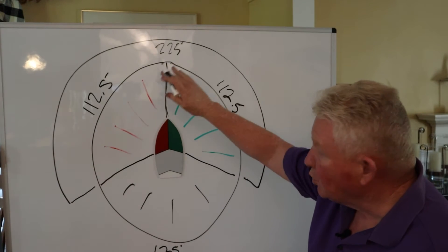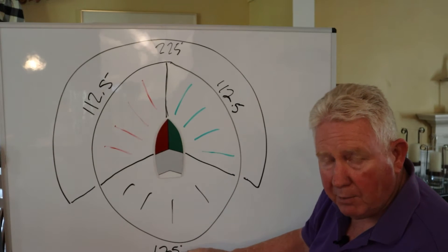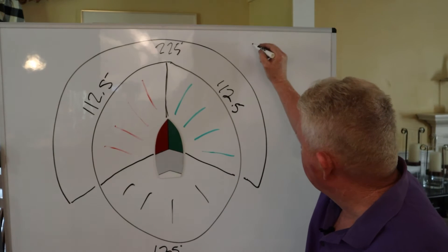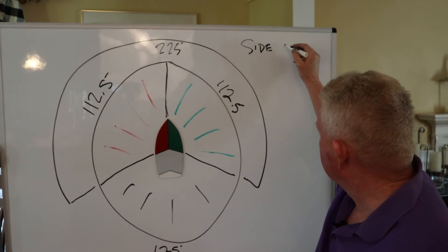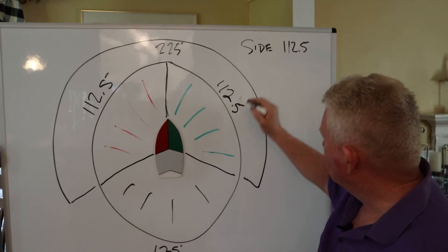If you add 225 degrees and 135, you come up with 360 degrees. So let's write this down: our side lights 112.5, our stern light 135.5.